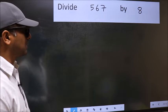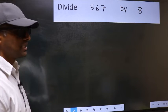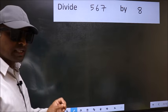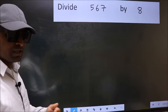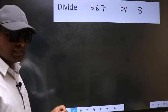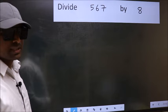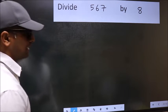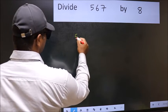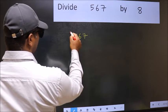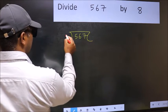Divide 567 by 8. While doing this division, many do this mistake. What is the mistake that they do? I will let you know, but before that we should frame it in this way: 567 and 8 here.